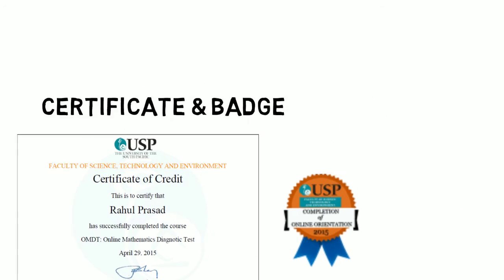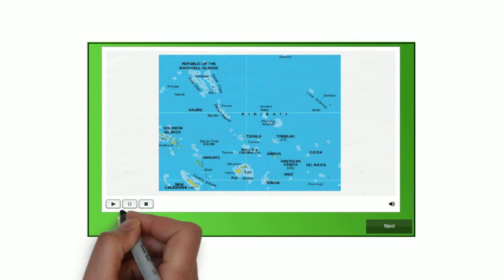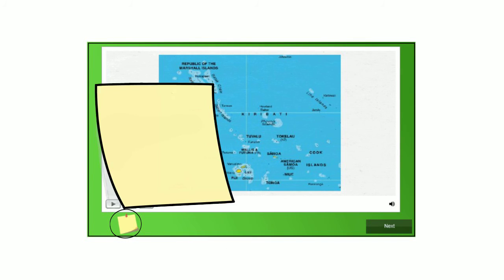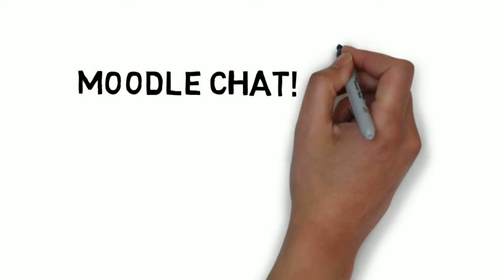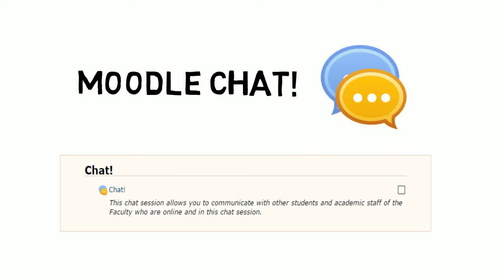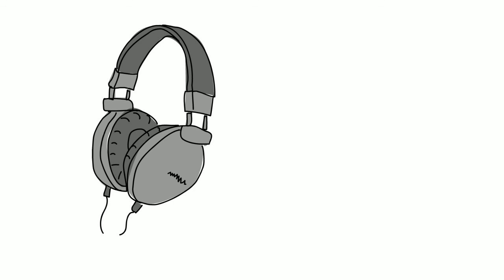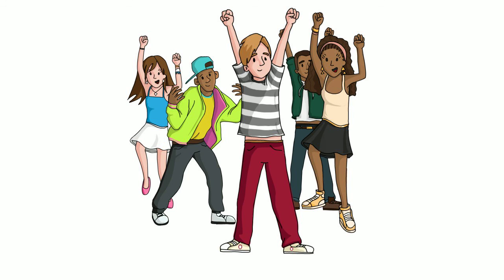In the online orientation, you can use your notebook to note down what you feel is important, or use the sticky notes feature available, which can be easily saved to your computer or external drive. We also have the Moodle chat feature enabled so that you can communicate with other students and staff who are online and in the chat session. To get the most out of the online orientation, we advise you to use headphones or speakers for audio. Have fun during this online orientation.